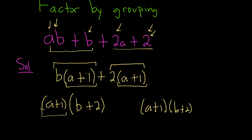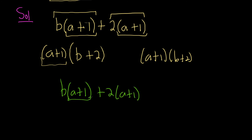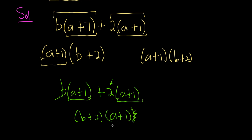Another way to do it — some people do it this way. Say you had B times A plus 1 plus 2 times A plus 1. You can factor this out and put it on the right, so it would look like A plus 1, and then you just take this one and this one — so it'll be B plus 2. That's a little bit more unnatural, so most people don't explain it this way. But you could do that and it does check out. If you do A plus 1 times B, you get A plus 1 times B; if you do A plus 1 times 2, you get A plus 1 times 2. It feels a little more unnatural — I like the way I did it first. I hope this video has been helpful.